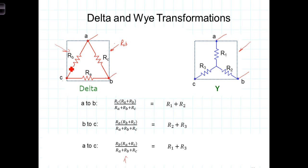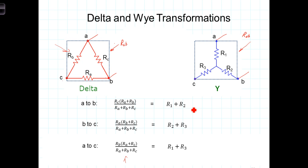In the Y connection, leaving the C terminal unconnected and looking between A and B, we have simply R1 in series with R2, since no current flows through R3. So R_AB in the Y connection is R1 + R2. Similarly, between B and C we have R2 + R3, and between C and A we have R1 + R3.